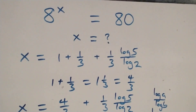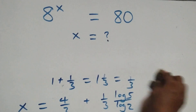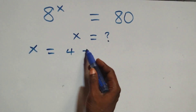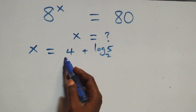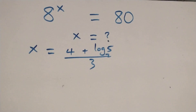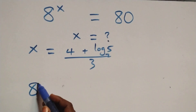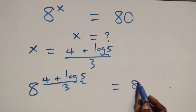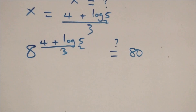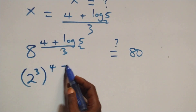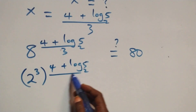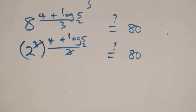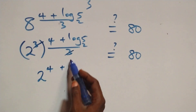Let's verify: we substitute x equals (4 plus log₂5) over 3 back into the original equation. We need to check if 8 raised to that power equals 80. Writing 8 as 2 cubed, the 3 in the denominator cancels the cube, leaving 2 raised to power (4 plus log₂5).